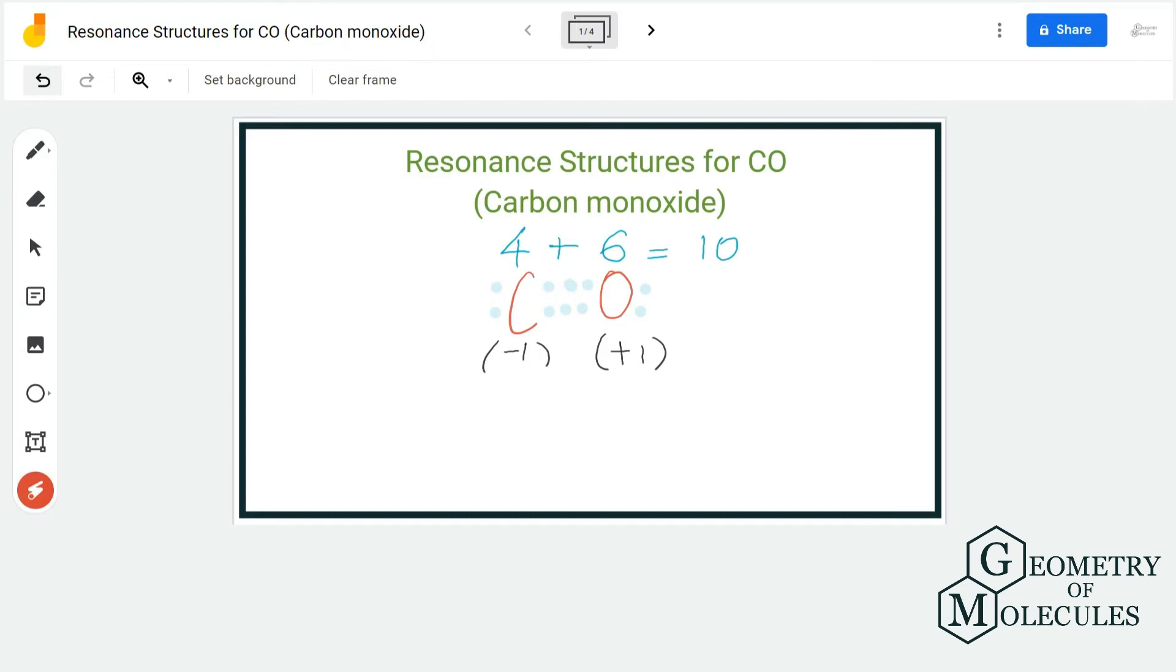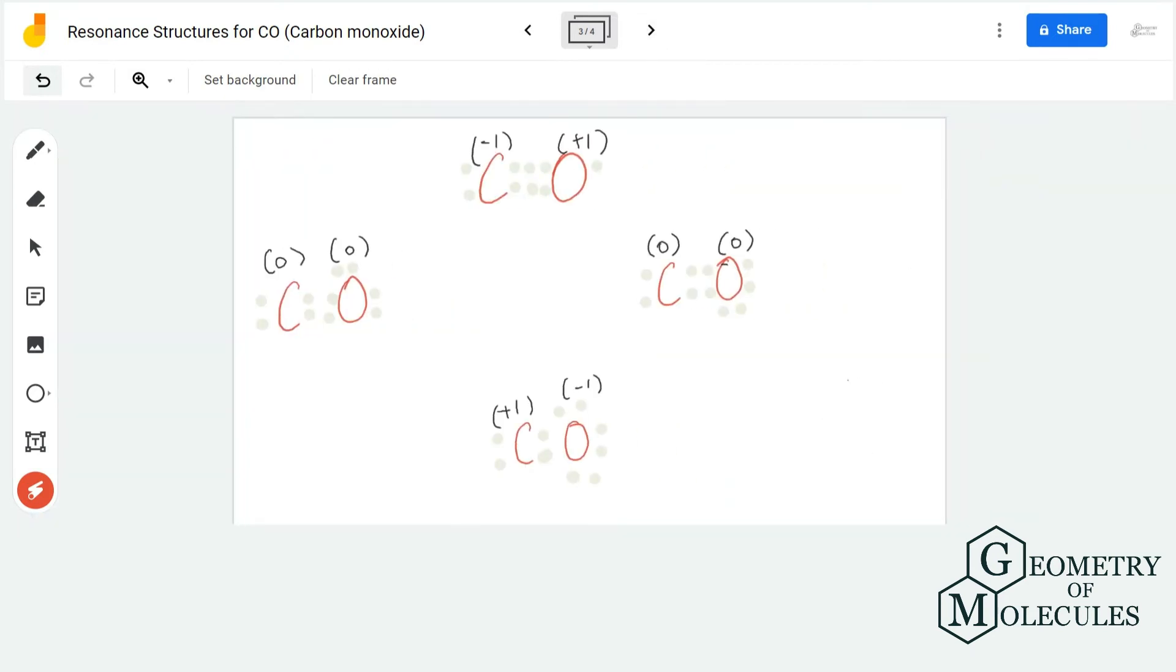So to make it more relevant, we try and find out the resonance structures for carbon monoxide. So here is one more structure that you can consider in which the charges on both carbon and oxygen atoms are zero.